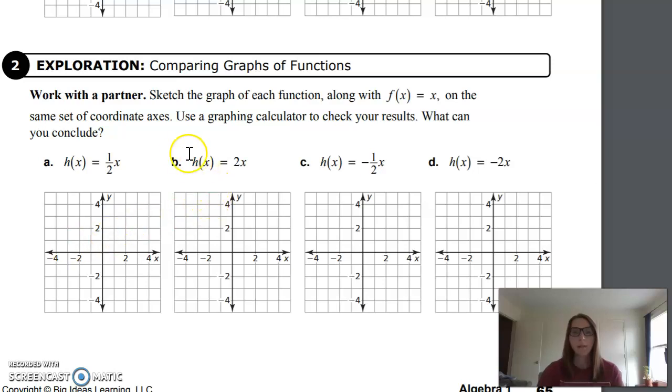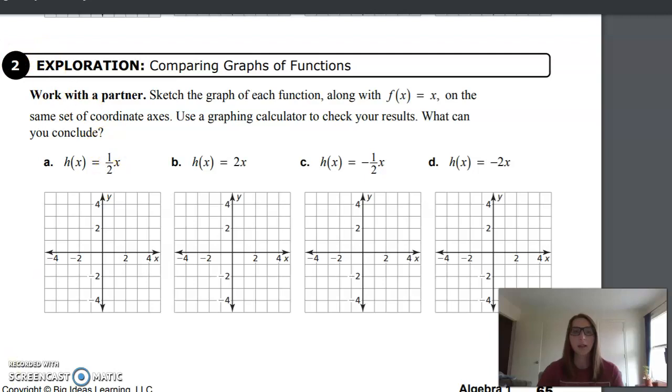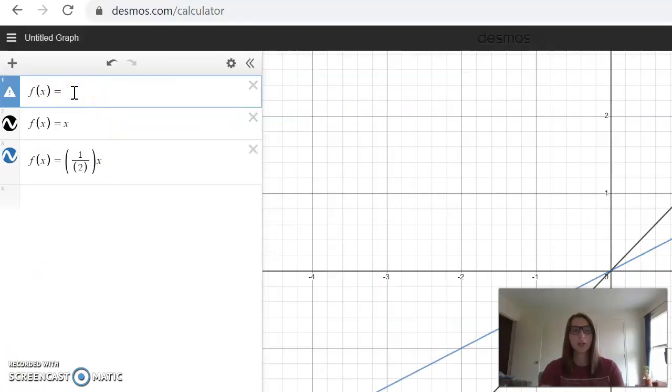So our second function will be b, h(x) = 2x. I'm going back to Desmos. So with this function, it just goes f(x) = 2x.